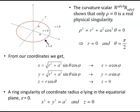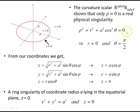Now a brief summary. The material here has occurred over the first couple of videos in the Kerr series. From the curvature scalar, when the Riemann tensor is contracted with itself, it shows that only ρ = 0 is a real physical singularity. And ρ² = r² + a²cos²θ = 0 requires r = 0 and θ = π/2, which gives us ρ = 0.